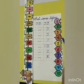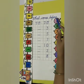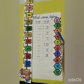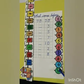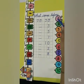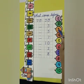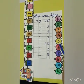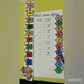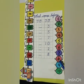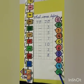Tell me kids, what is this? This is a caterpillar and I have written numbers from 1 to 10 on it. Now let's count: 1, 2, 3, 4, 5, 6, 7, 8, 9, 10.